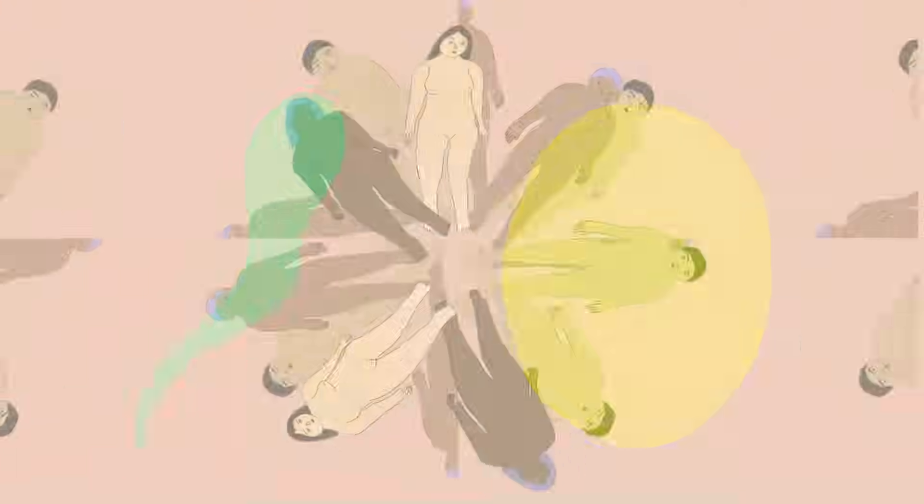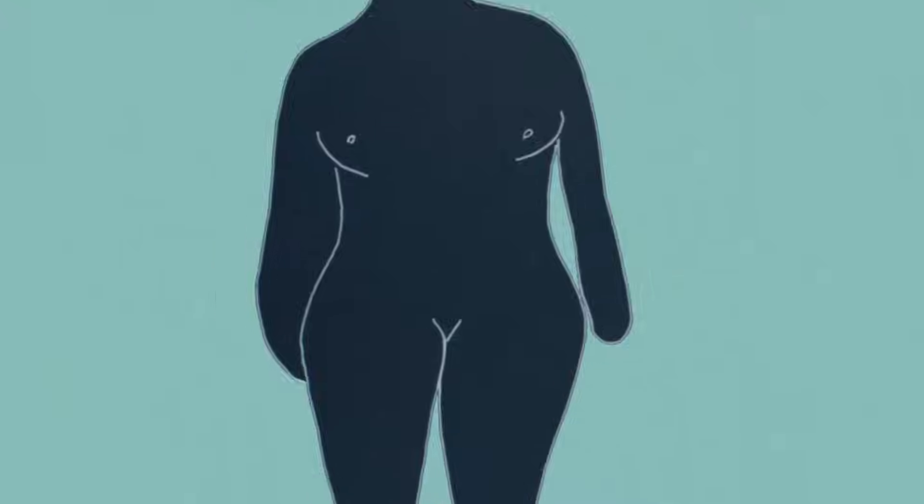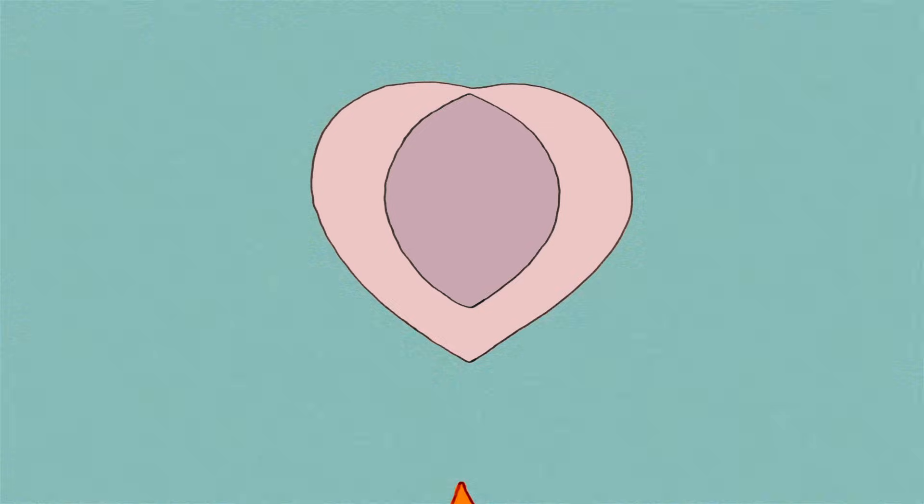At puberty, everyone's body changes and becomes able to reproduce. At some point between the age of 8 to 13, a person that is biologically a female starts ovulating. It's also called the menstrual cycle, or starting their period.